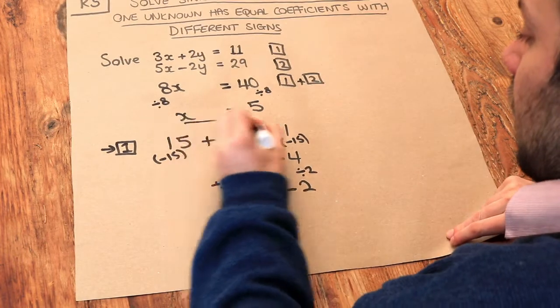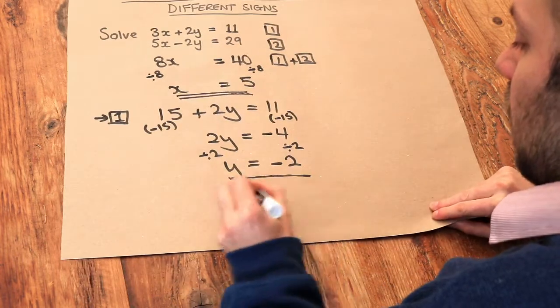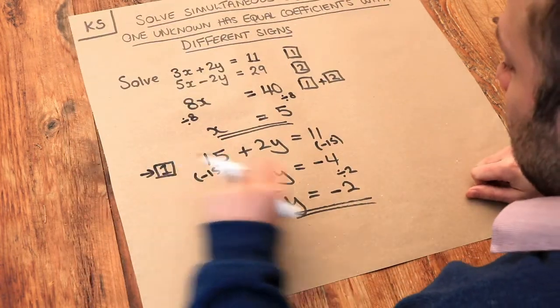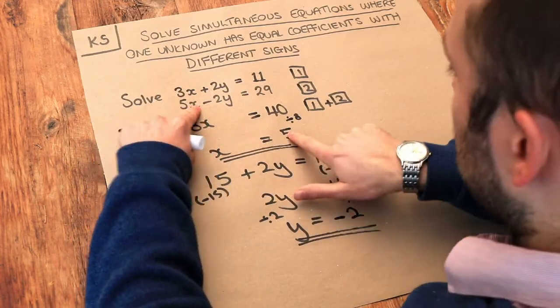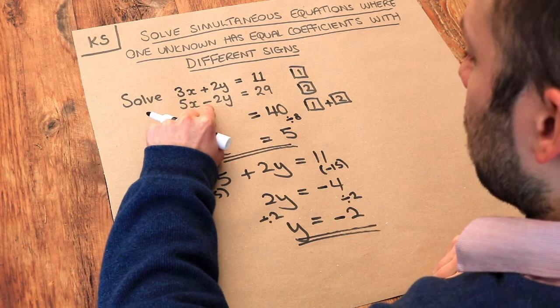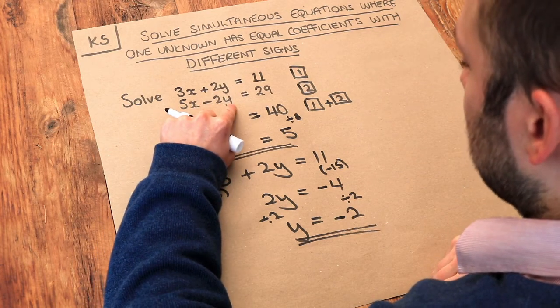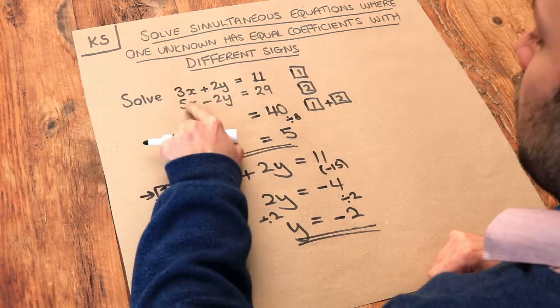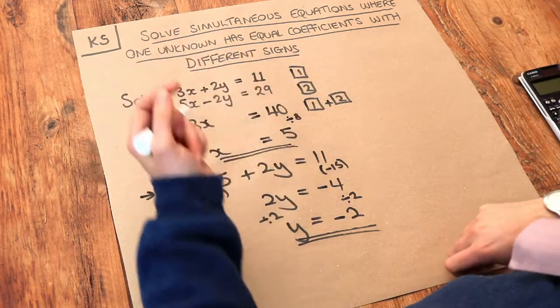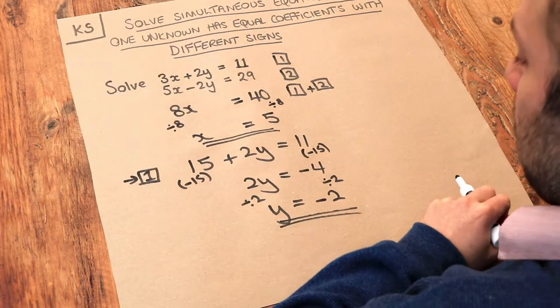And then we've got our two values. We've got x is 5 and y is minus 2. And if we substitute, say, into the second equation, it should work with the second equation as well. So 5 times x, 5 times 5 is 25. And then we're subtracting 2 times negative 2. Well, we're subtracting minus 4, which is the same as adding 4. 25 plus 4 is 29. It does indeed work with both equations.